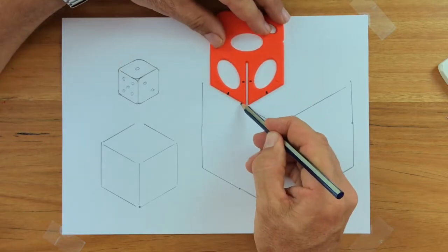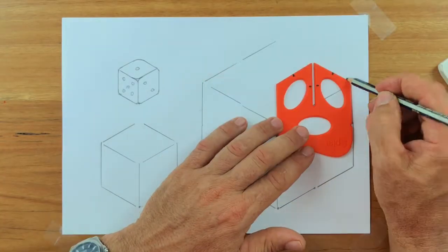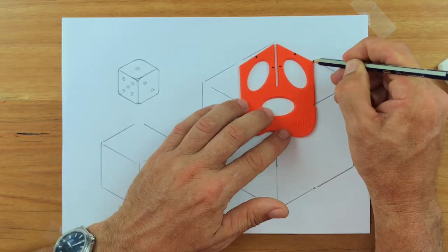You could use a ruler for this as well, but I'm going to trace this off when I'm finished, so I'm not worried about it being a little bit rough. I'm going to trace mine.